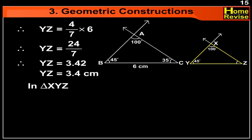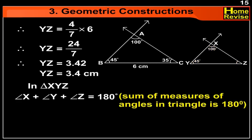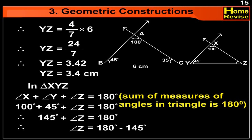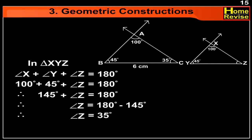In triangle XYZ, angle X plus angle Y plus angle Z is equal to 180 degrees. Putting the values of angle X and angle Y, we get 100 degrees plus 45 degrees plus angle Z is equal to 180 degrees. Therefore, angle Z is equal to 180 degrees minus 145 degrees, which equals 35 degrees.